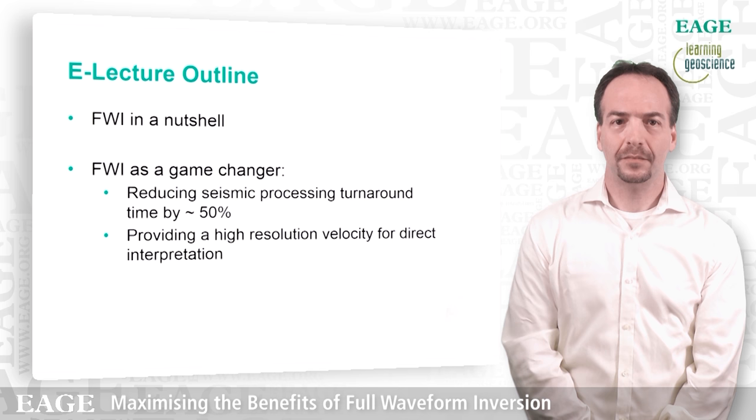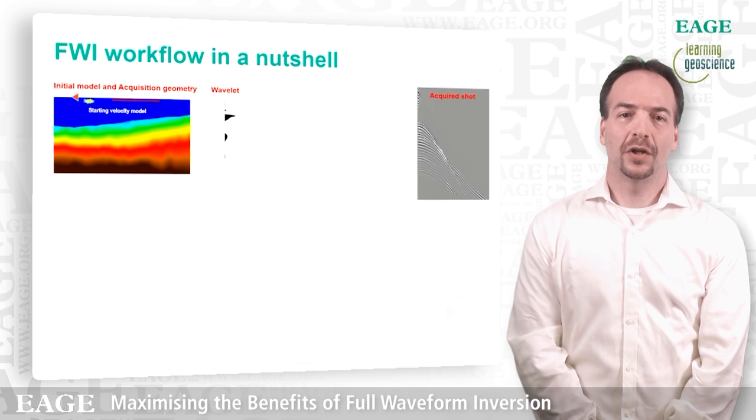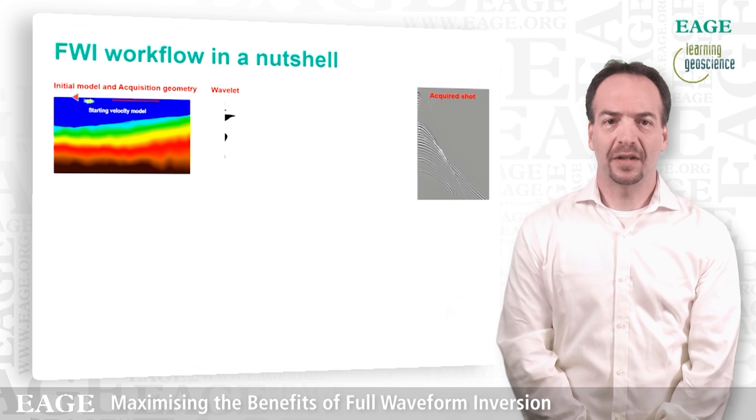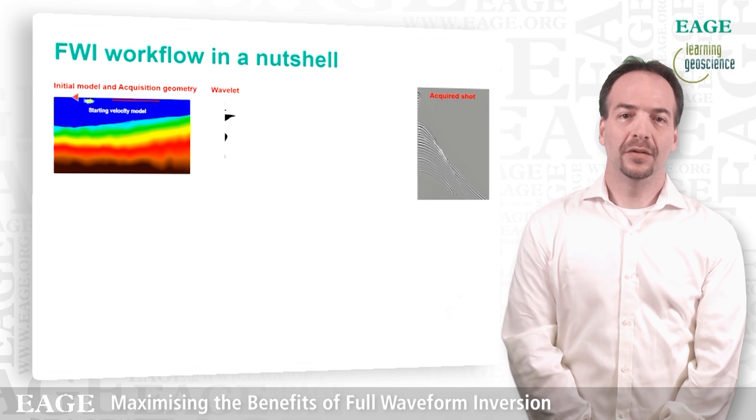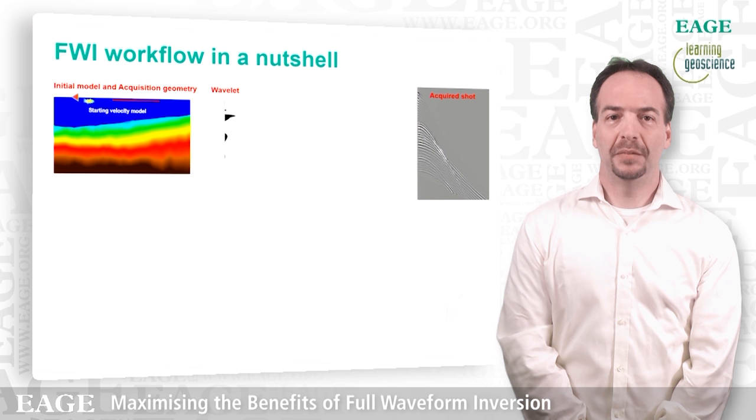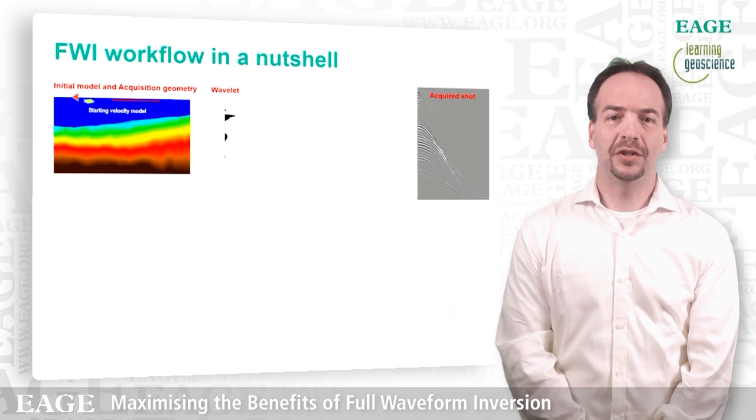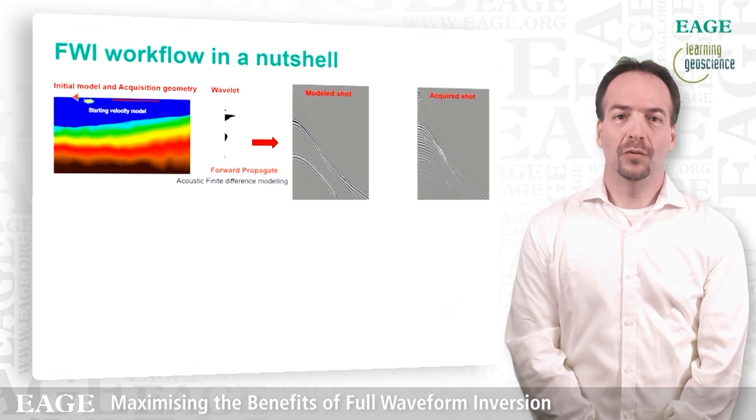FWI is a data-driven technique that allows you to recover high-resolution velocity models with a resolution that is well above what we can do at the moment with travel time tomography. You compare wiggle by wiggle data that are acquired in the field with data that we simulate on a computer. Our input is basically a shot gather, an initial velocity field, a wavelet and the acquisition geometry. With that, we can simulate a shot on a computer.